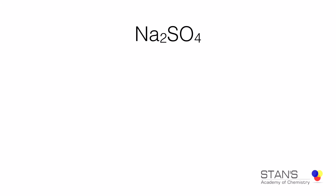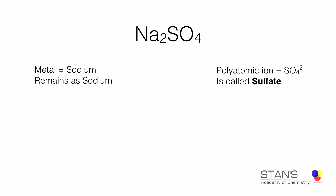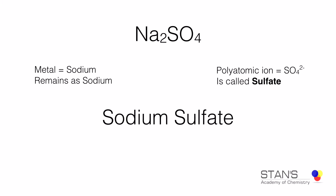In the next example, you have a compound formed between sodium and sulfate. The metal is sodium. We do not have a non-metal here — we have a polyatomic ion, and the name of the polyatomic ion is sulfate. Therefore, the name of the ionic compound will be sodium sulfate.